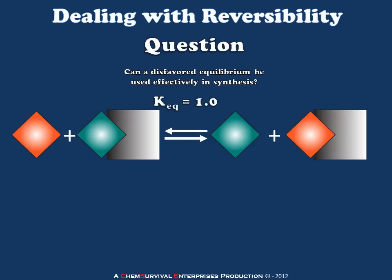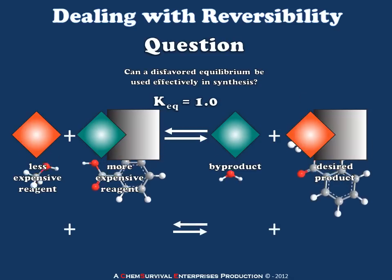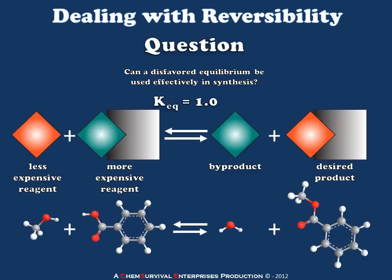In this case, I've got two reagents reacting to form two materials. The orange represents the less expensive reagent, the green and gray complex the more expensive reagent, the green square represents our byproduct, and the orange and gray complex represents the desired product. This is an exact duplicate of one of the reactions we'll be working with — the Fischer esterification — shown here as the esterification of methanol with benzoic acid to form water and methyl benzoate. This has the same stoichiometry and similar reversibility, with equilibrium constants somewhere around one.